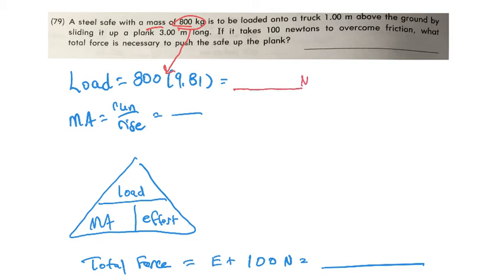So we need that. Remember the formula for mechanical advantage: it says the run over the rise. Do we know the run? Three meters long and one meter above the ground. So we can put in three over one, which gives us a mechanical advantage of three. That was easy. Okay, so let's put three down here.